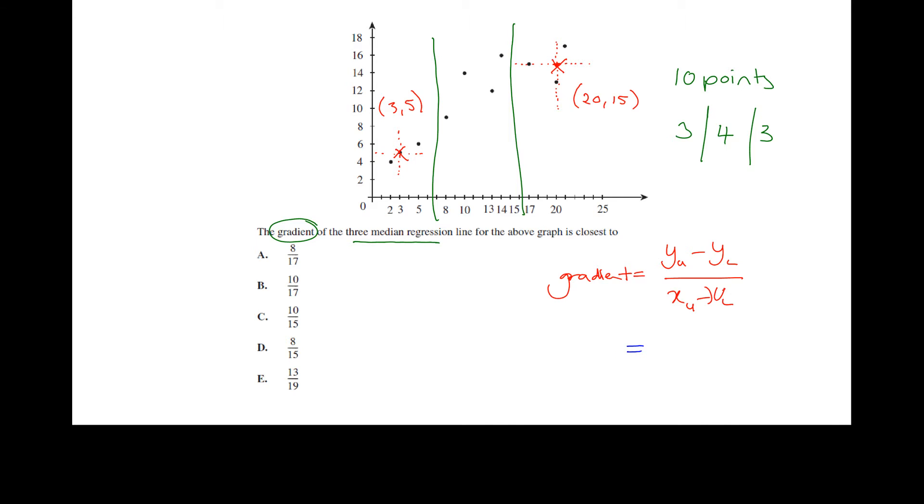If i look at the top section or the upper section working across my middle value will be in line with this one here at 20 and working up the page my middle value will be here in line with that one which is at 15 so this time not an actual data point but we can still work out what that is and it's at 20 and 15. Okay so i substitute those values in y upper minus y lower over x upper minus x lower and i end up with 10 over 17 so my answer there is b.